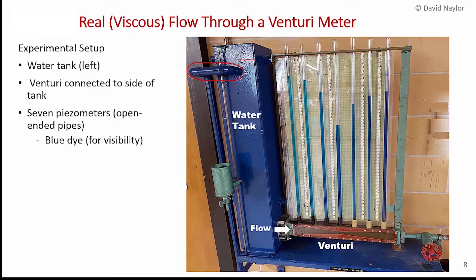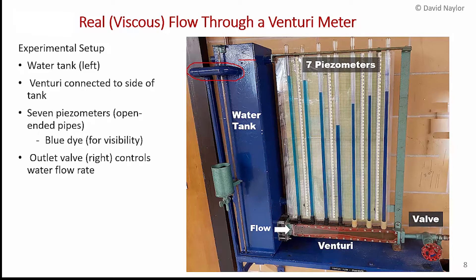There are, as I mentioned, seven piezometers. In this case I've added a little bit of blue dye to the flow just so you can see the heights of the piezometers. When you do the experiment for lab four, there won't be any dye. There's a valve here, just a hand valve on the outlet, that allows me to control the flow rate through the system.